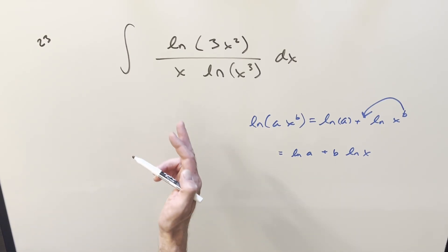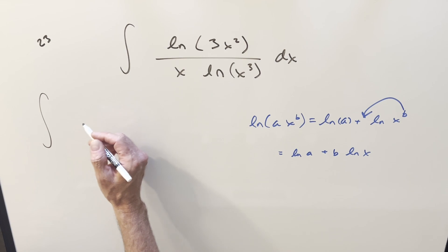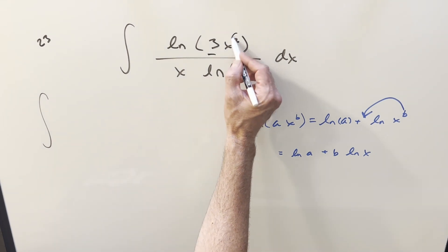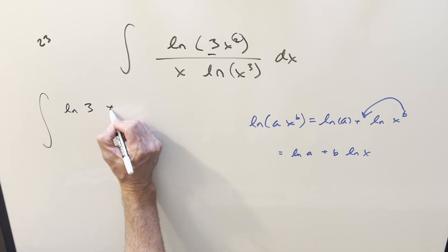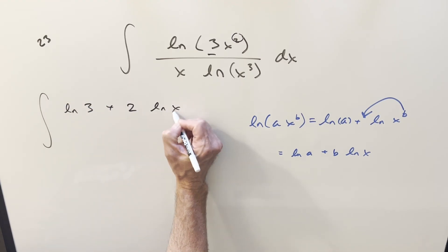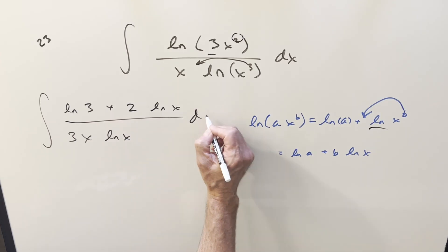So using this on our problem here, doing the same kind of thing particularly with the numerator, where the a value is 3 and the b value is 2, we can break this up as natural log 3 plus 2 ln x over x. And then here, bring the exponent out. Same idea, let's bring it out in front, so we'll have it as 3x ln x dx.